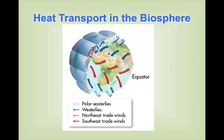These large convection currents in the atmosphere are very important to our climate. In our area, we get most of our weather systems from the west because we're in the presence of the westerlies, which blow in weather systems that have rain, snow, sleet, hail, or good weather.